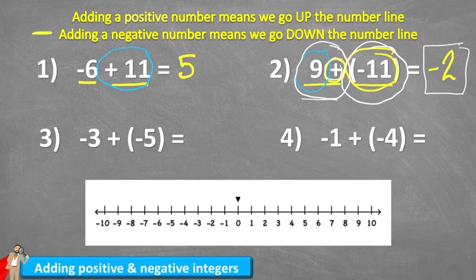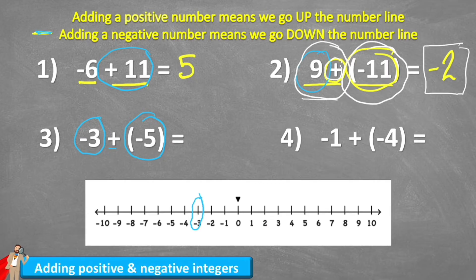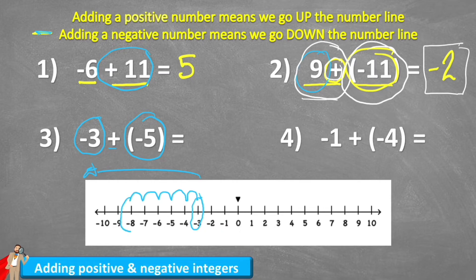Let's look at question three. Question three says negative three add negative five. We're going to follow the same steps — I'm going to circle my negative three on the number line, there it is. And I'm adding another negative, negative five. So remember rule two: if I add a negative, I come down the number line. I was already owing someone three, and then someone added another minus five, another owing five. Negative three: one, two, three, four, five — added a negative five, leaves me with negative eight.